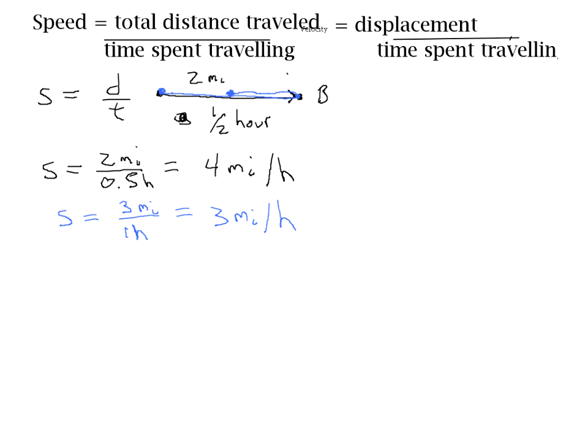We often will use the symbol V to stand for velocity, and for displacement we can use vector x, and then T is still time. Let's look at the same two trips we looked at before when we found average speed, except this time we're going to find average velocity.